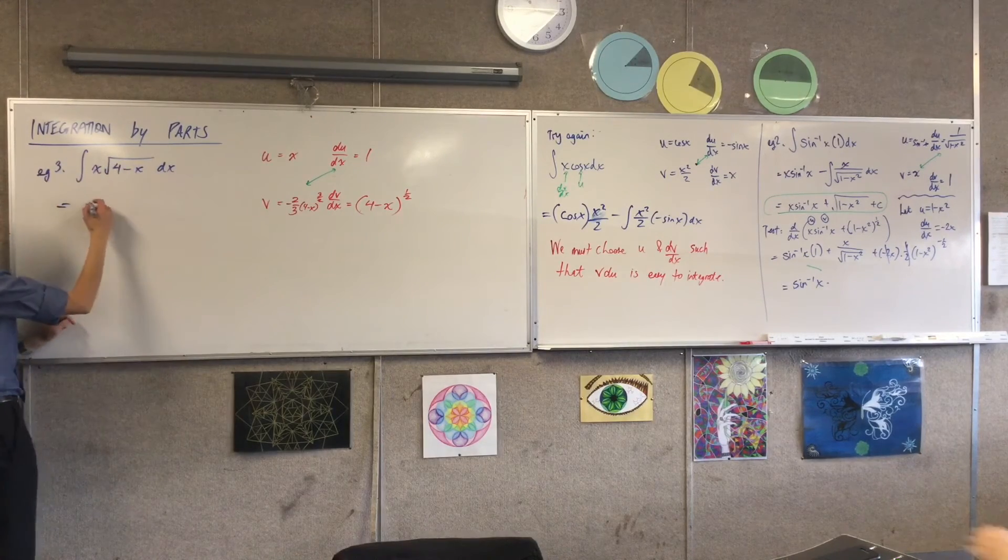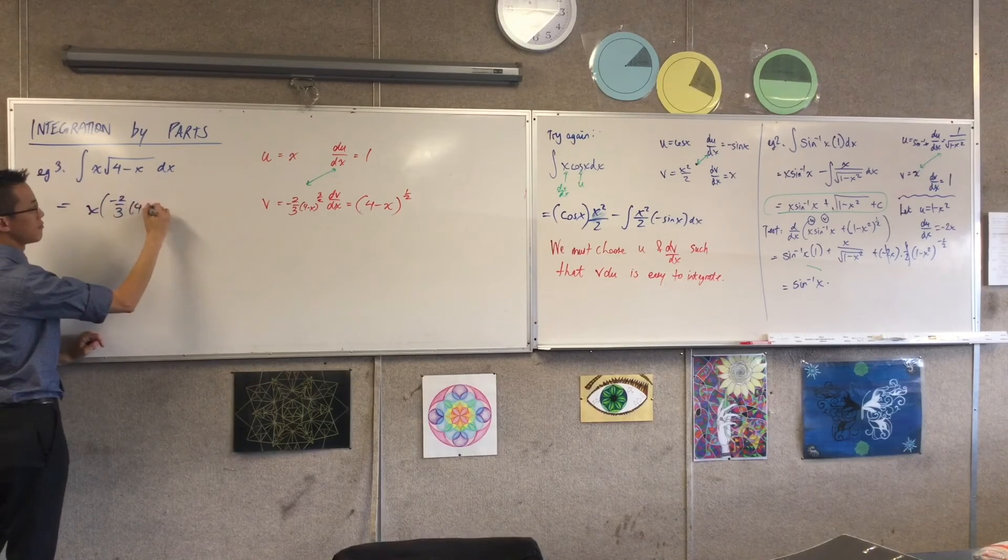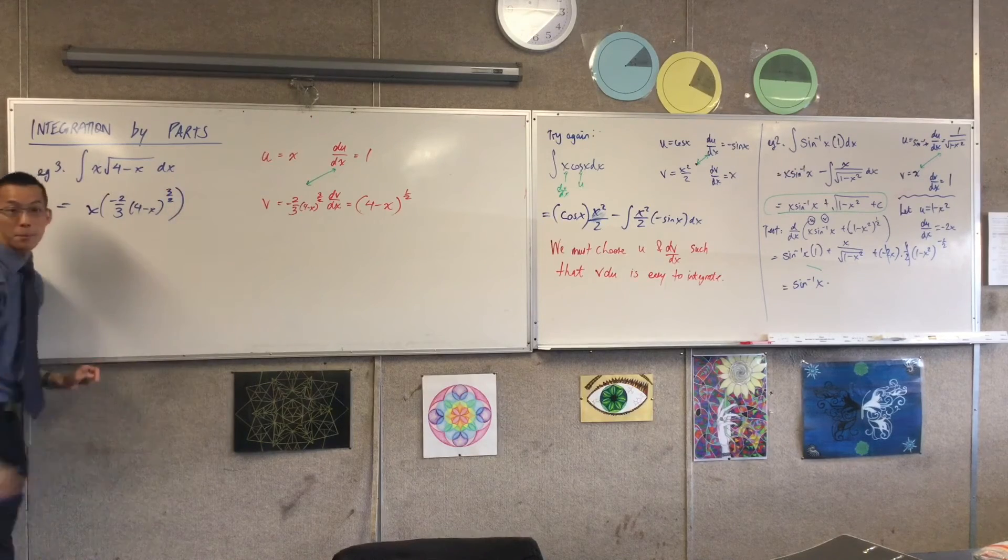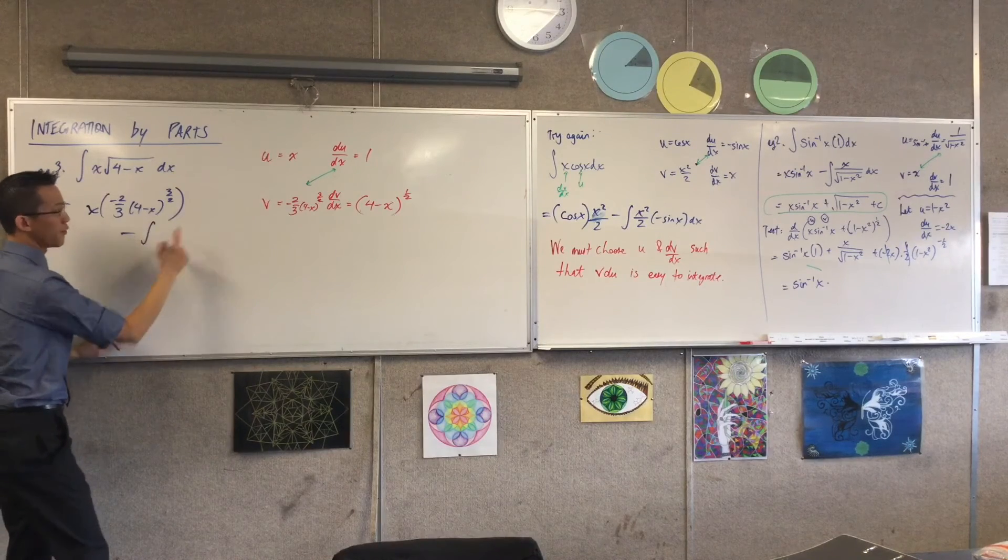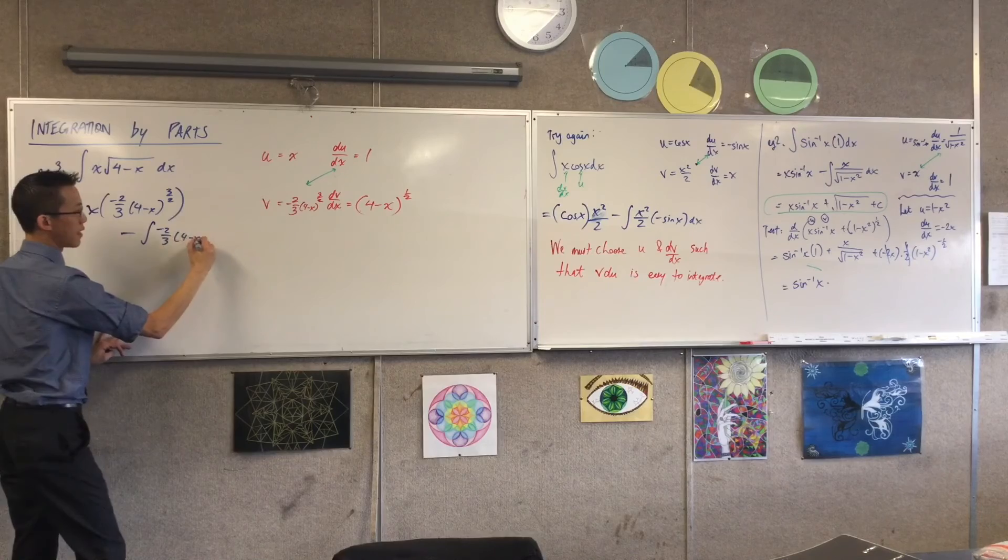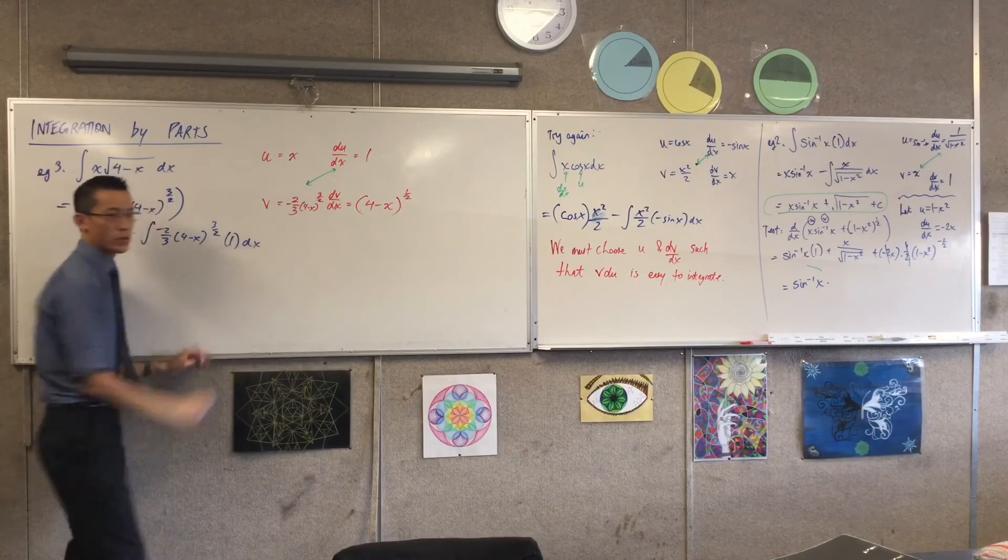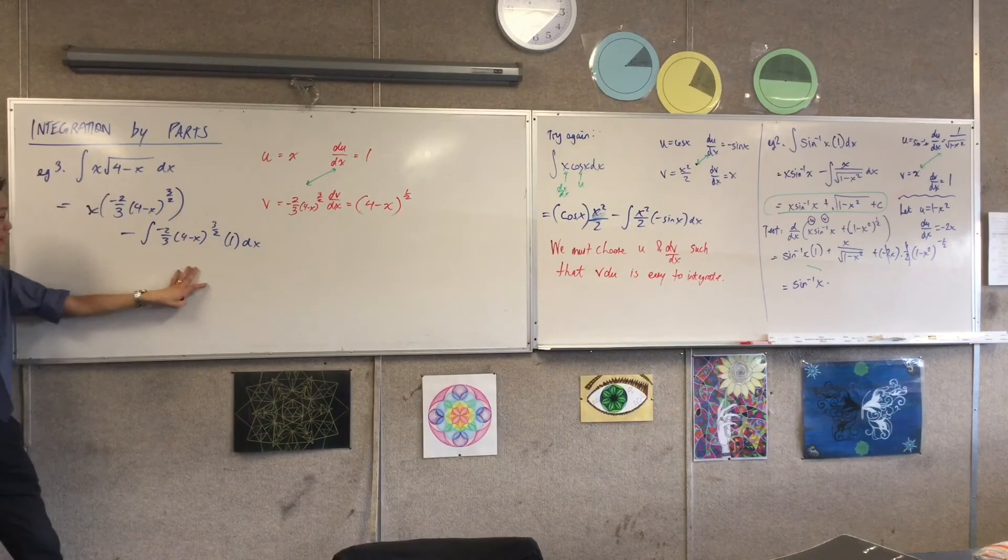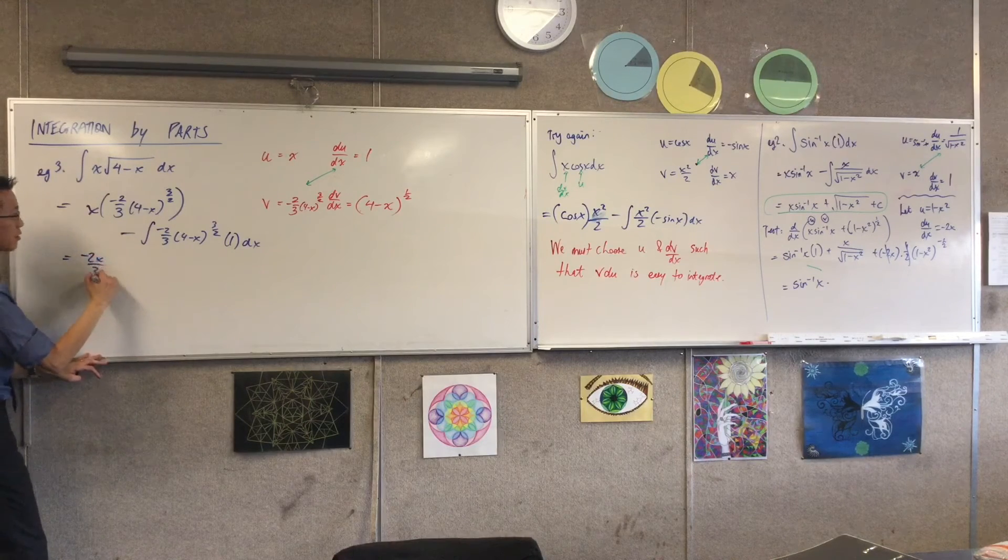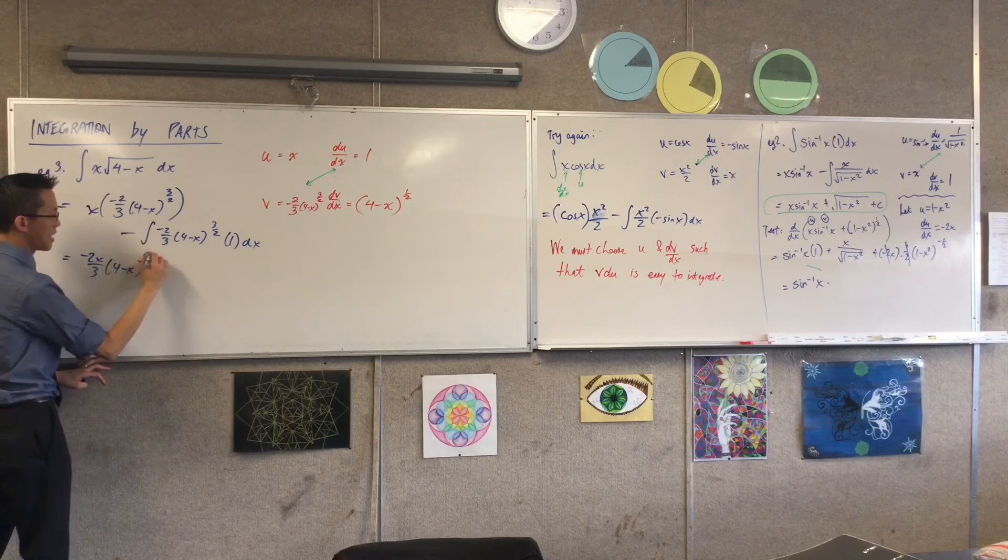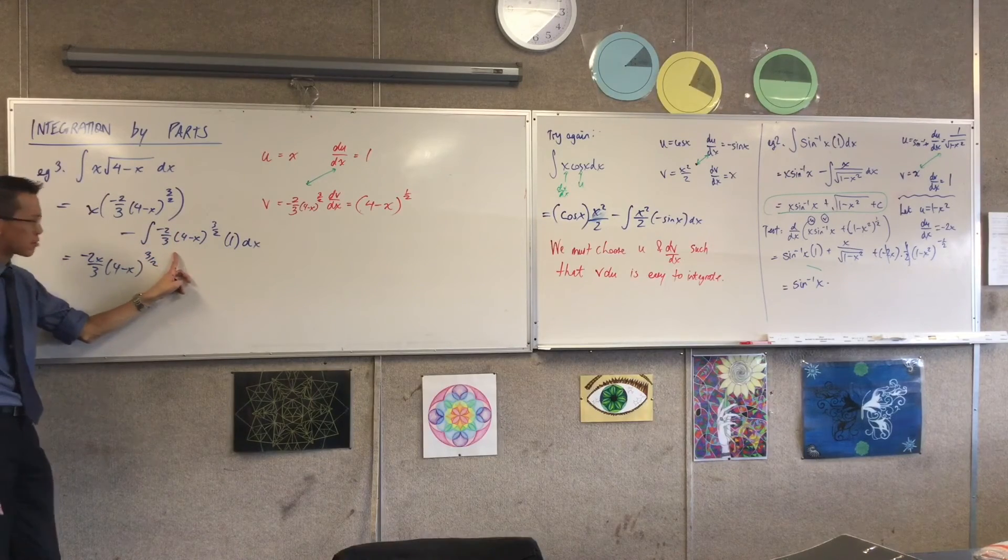The integral of u dv is equal to u times v minus the integral of v du. So I've got minus 2x on 3, 4 minus x to the 3 over 2, minus the integral of 2 thirds, 4 minus x to the 3 over 2, times du, which is just 1, with respect to x. Okay? Now here, it looks a bit messy, but if you're patient with it, it's fine, because you've got this guy at the front, minus 2x on 3. I'm just going to leave it in that index form, because it doesn't become immediately nicer and neater. What happens when I integrate this?